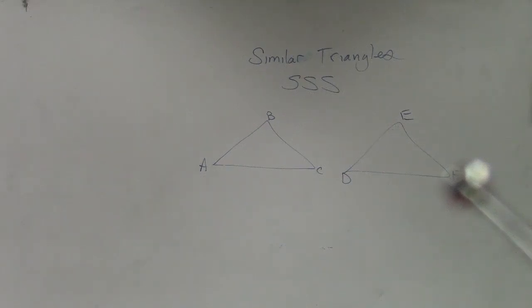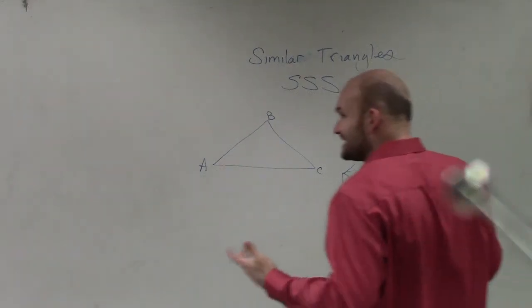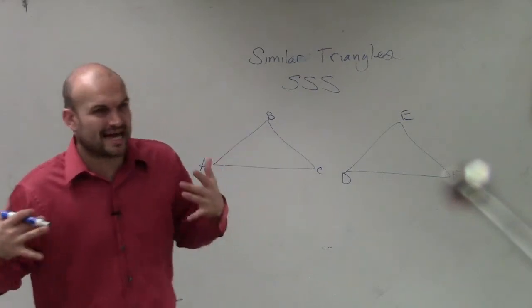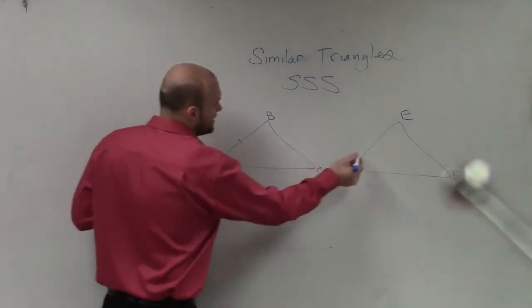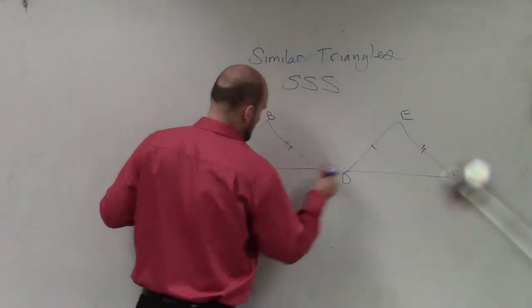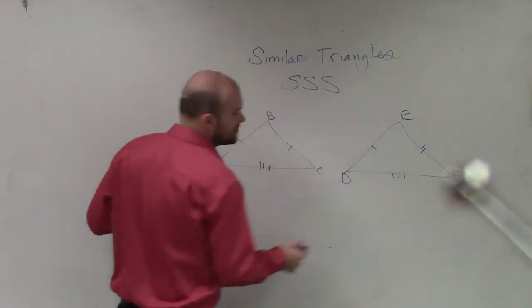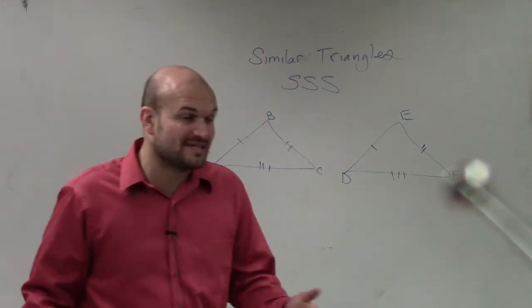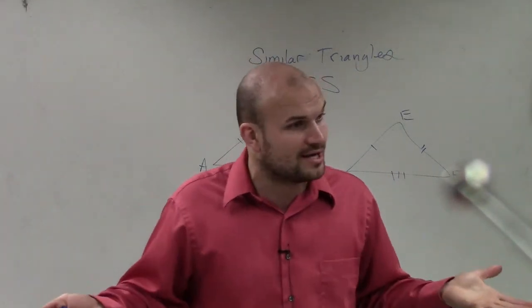But what we're trying to do is if we're going to try to prove similarity with side, side, side, I don't mean the actual lengths are equal to each other. I don't mean these lengths are equal to each other. Because if those lengths were equal to each other, side, side, side would be similarity, but it would also be congruency, right?